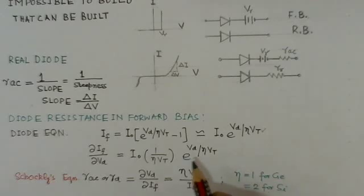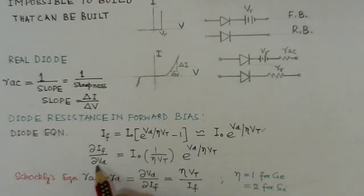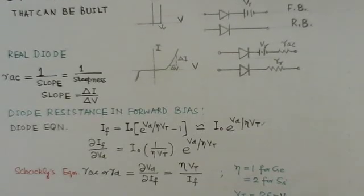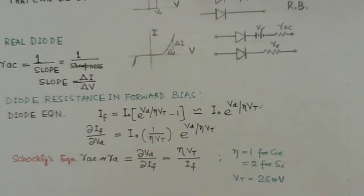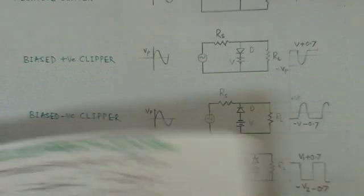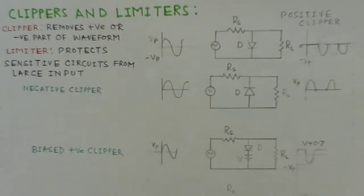The Shockley equation gives the dynamic resistance of the diode. Starting from the well-known diode equation and taking the derivative, we get delta-V_D over delta-I_F, which simplifies to R_AC = η·V_T / I_F. Here, η (eta) is 1 for germanium and 2 for silicon, and V_T is the thermal voltage of the diode. By knowing the forward current and the diode material, we can always determine R_AC. This equation is widely used in analog circuit applications, especially in bipolar junction transistors and FETs.